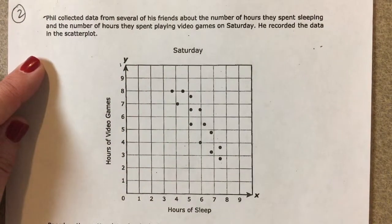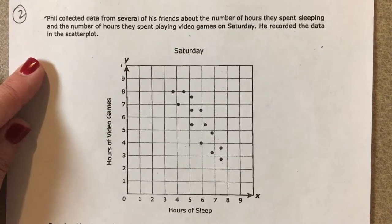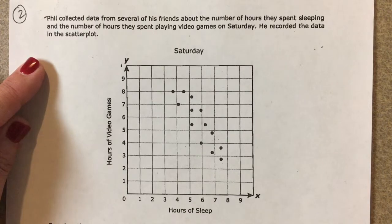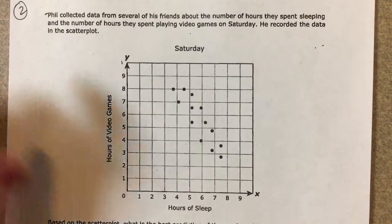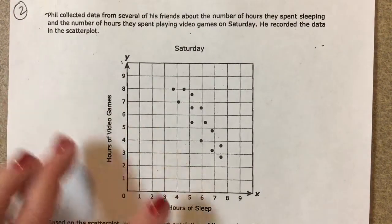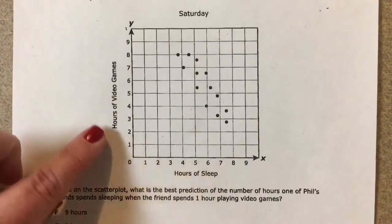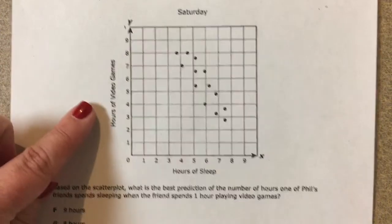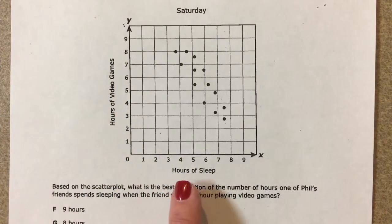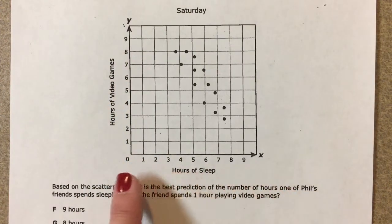Phil collected data from several of his friends about the number of hours they spent sleeping and the number of hours they spent playing video games on Saturday. He recorded the data in a scatter plot. Here's our scatter plot — the number of hours of video games and the hours of sleep.